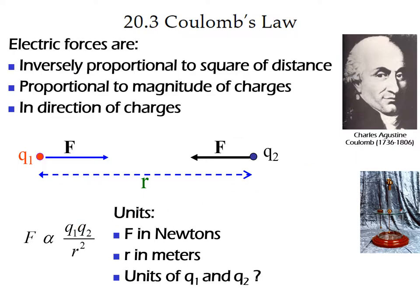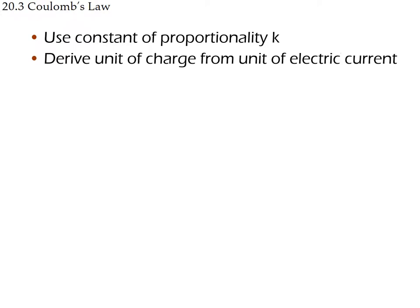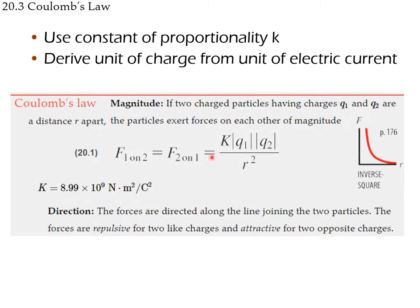The charges are measured in units called Coulombs, and the proportionality constant is denoted by K. The force that one charge exerts on the second has the same magnitude as the force the second exerts on the first. Using absolute values of the charges, the constant K is approximately 9×10⁹ N·m²/C², where Coulomb is now the unit of charge.